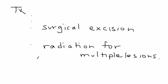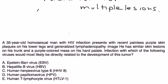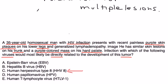Clinical vignette one: a 35-year-old homosexual man with HIV infection presents with recent painless purple skin plaques on his lower legs and generalized lymphadenopathy. He has similar skin lesions on his trunk and a purple-colored mass on his hard palate. The question asks which virus would most likely be directly related to the development of this tumor. As discussed, the answer is human herpes virus type 8 — answer choice C.